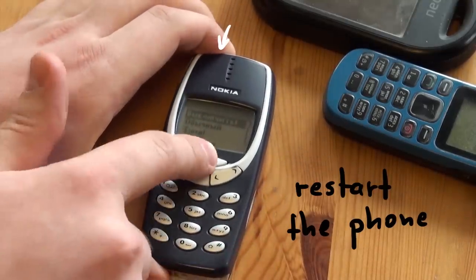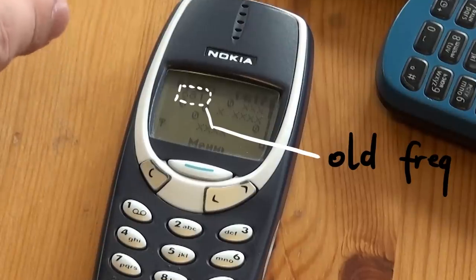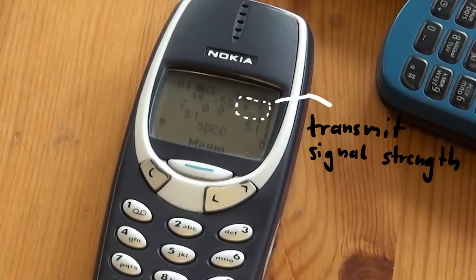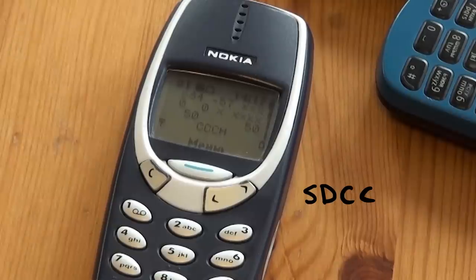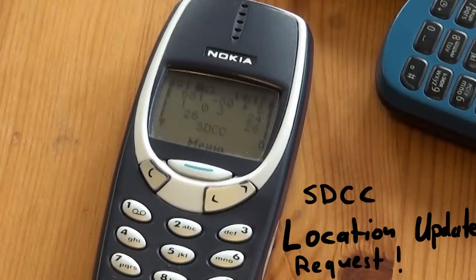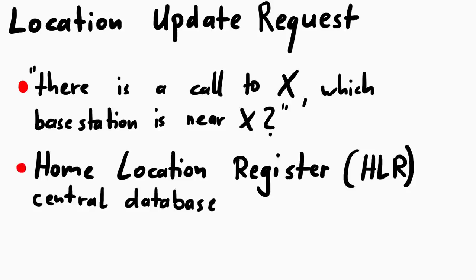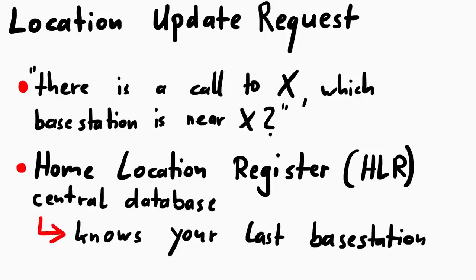Let's reboot this phone to see what happens. It remembers the last ARFCN it was tuned to — the phone always looks for a channel with the best signal quality. Now it is on SDCCH, Standalone Dedicated Control Channel, which is usually used to perform location updates. A location update is essentially the phone saying, 'I am here at this particular part of the planet.' When somebody wants to call you, the operator looks up your last location and uses that base station to send a paging request.